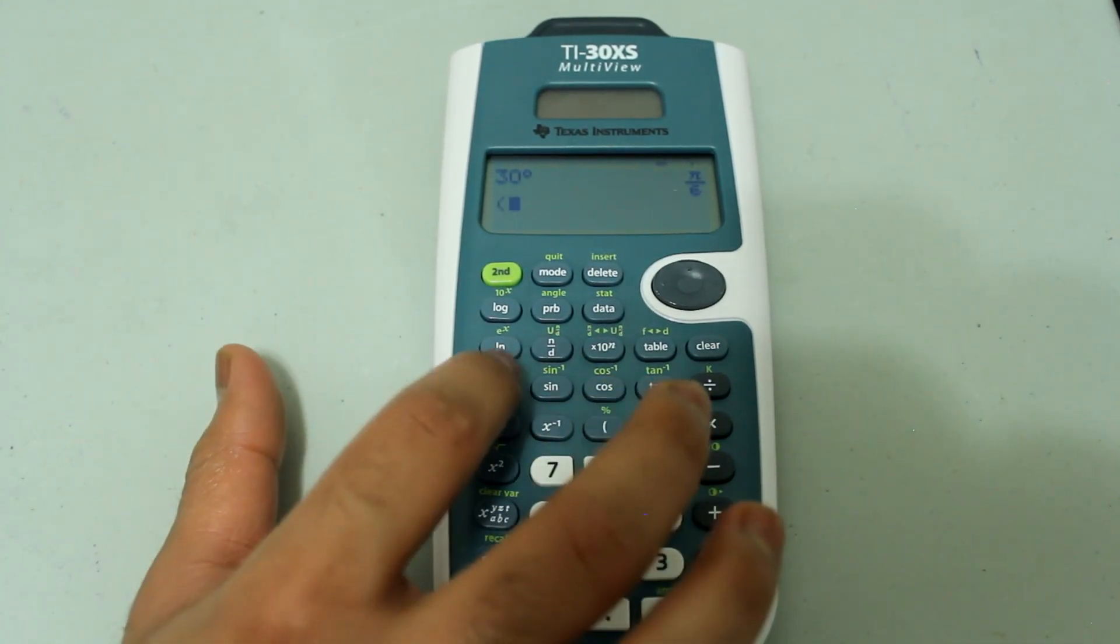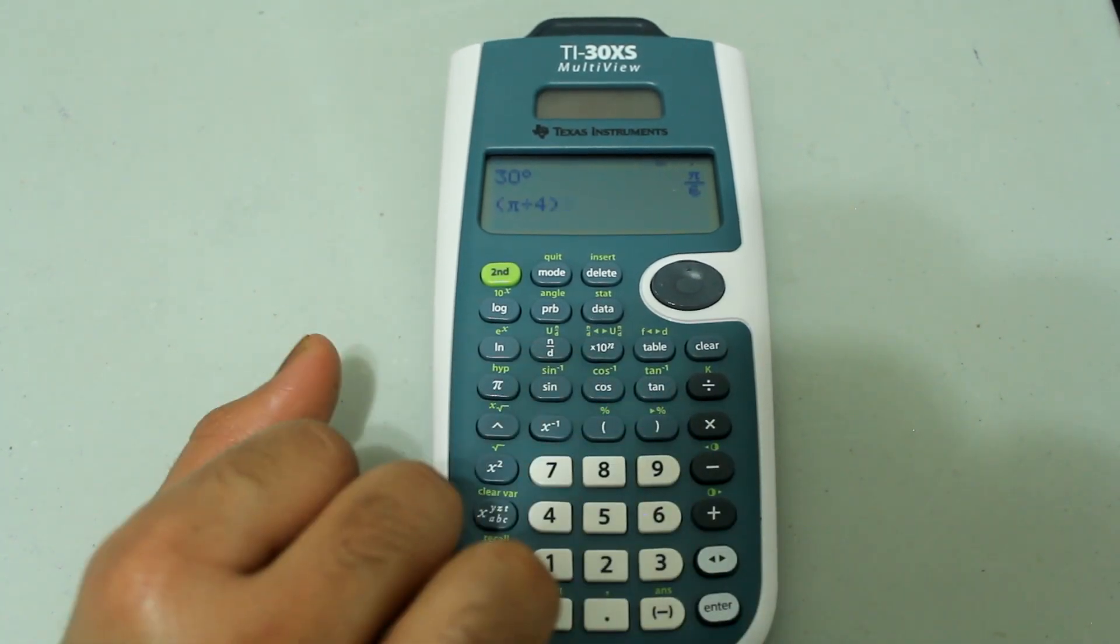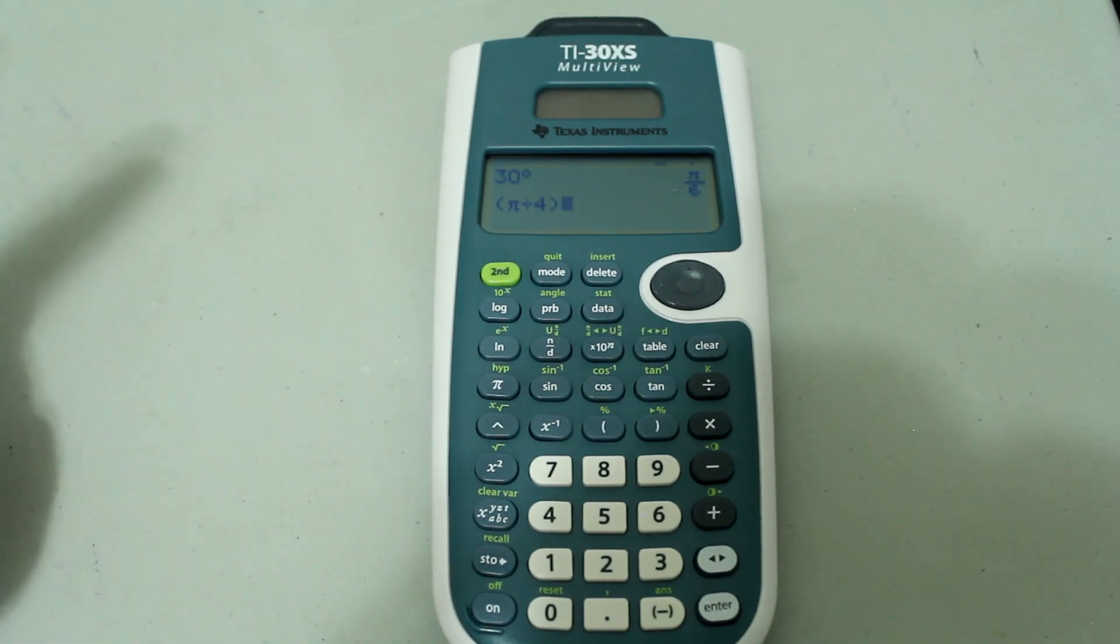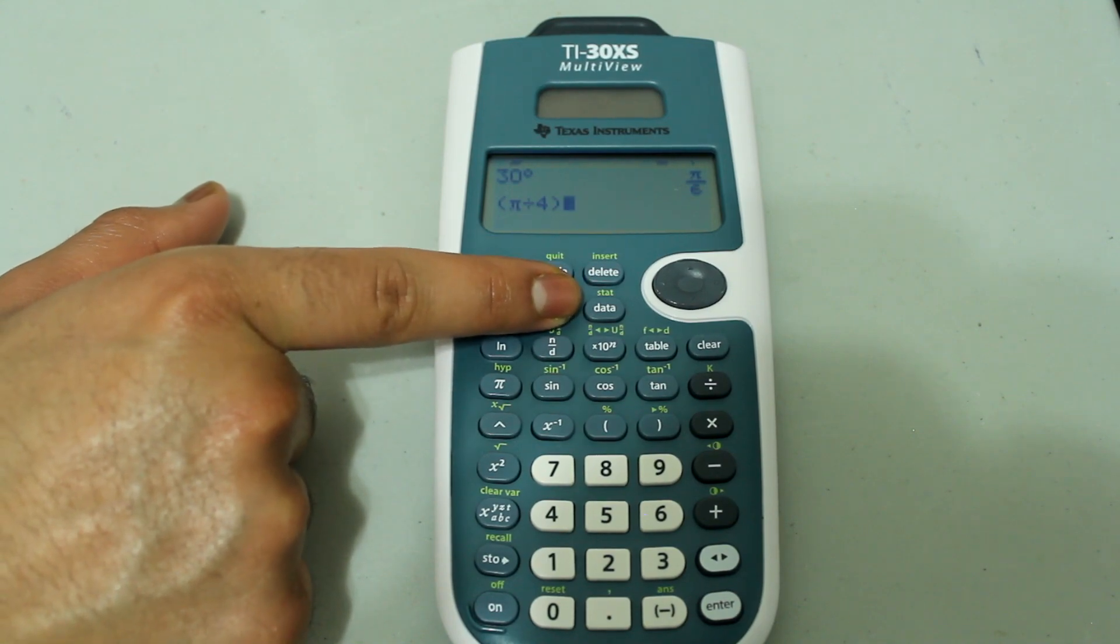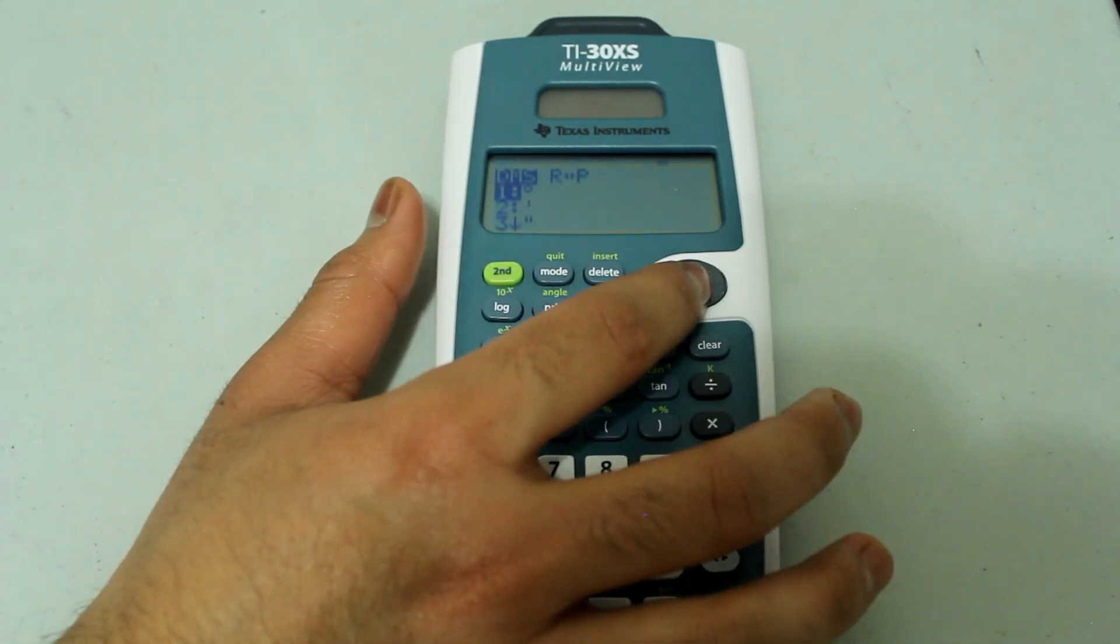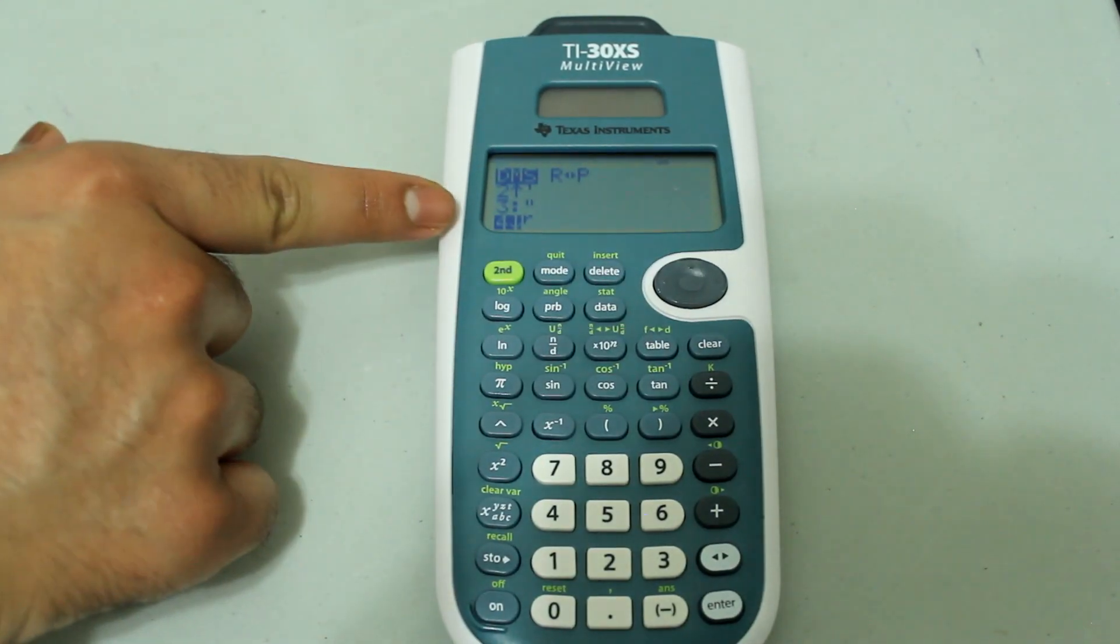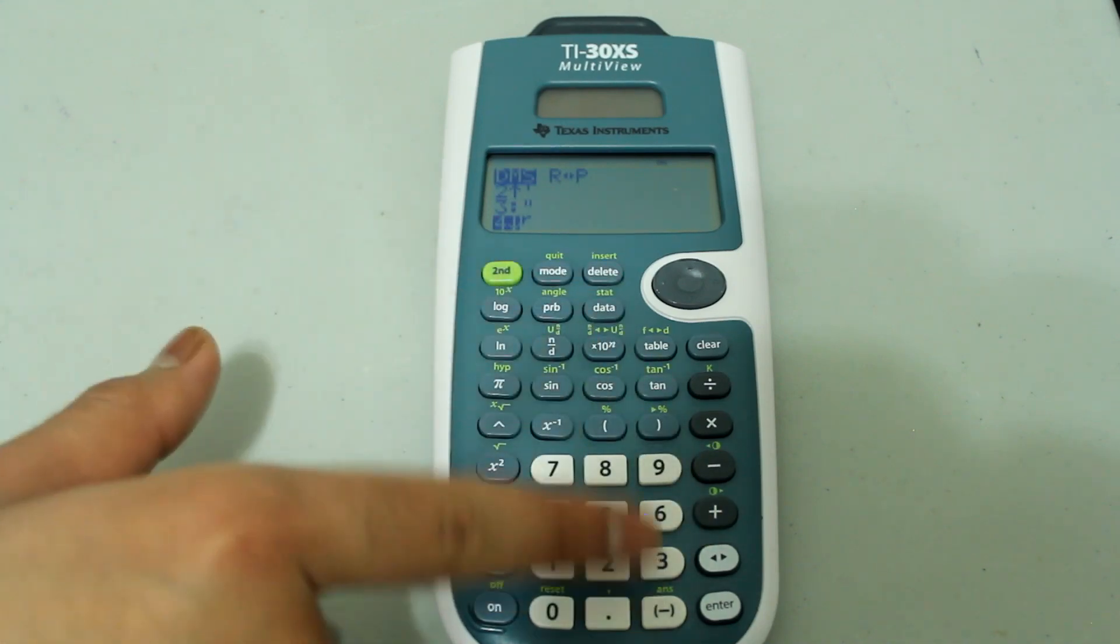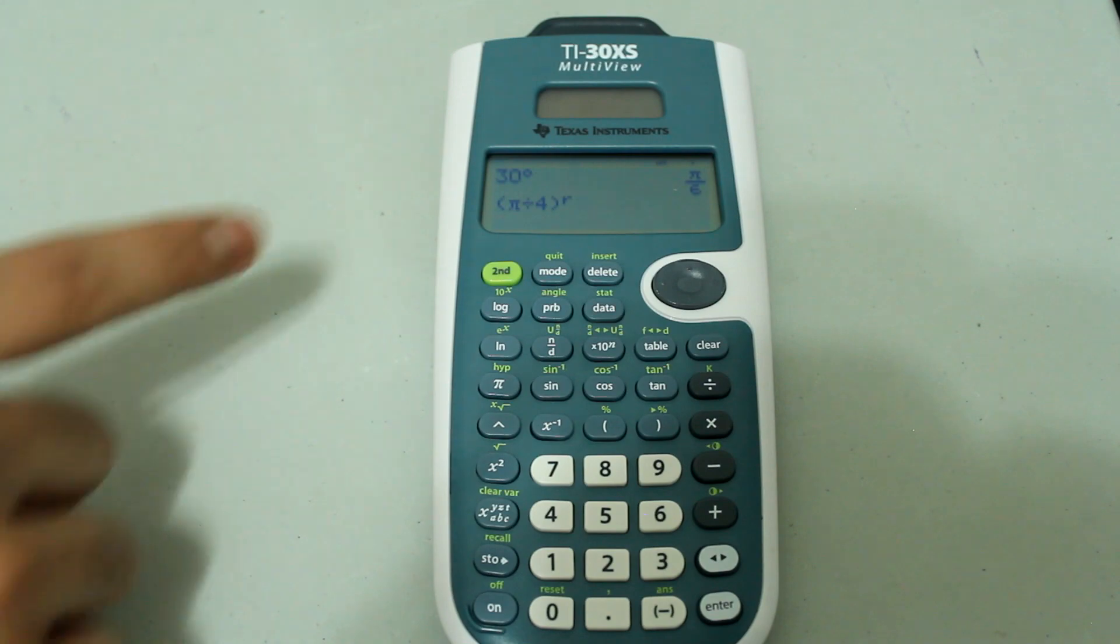Let's type in pi over 4 and then close the parenthesis. And let's tell the calculator that this entry is in radians. So second and the PRB button to select angle. And radians is number 4. You could have arrowed down and hit enter or you could just press 4 on the number pad and that selects the radian feature.